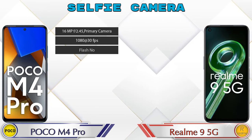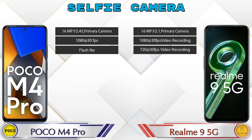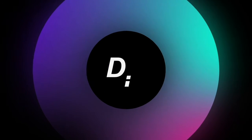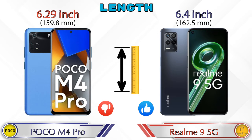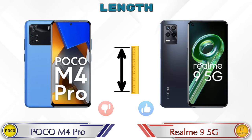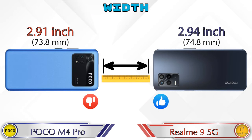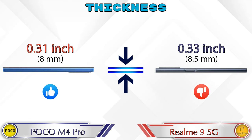For the front selfie camera, both phones have a single camera with three different features available. Now checking dimensions — the length of Poco M4 Pro is 6.29 inches and Realme 9 5G is 6.4 inches. Width of Poco M4 Pro is 2.91 inches and Realme 9 5G is 2.94 inches. Poco M4 Pro has a thickness of 0.31 inches and Realme 9 5G is 0.33 inches.